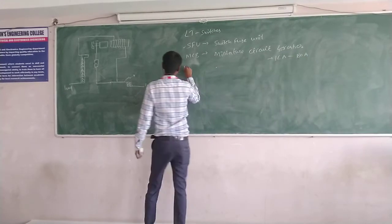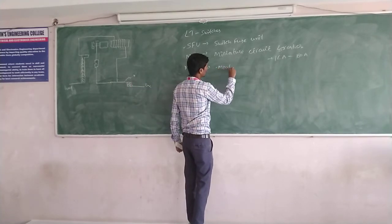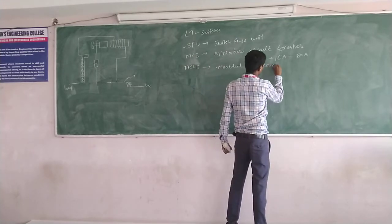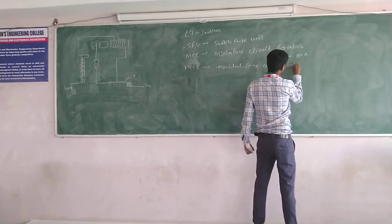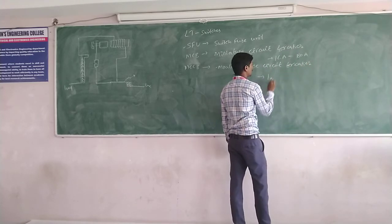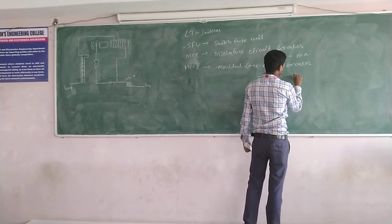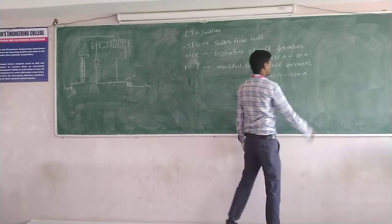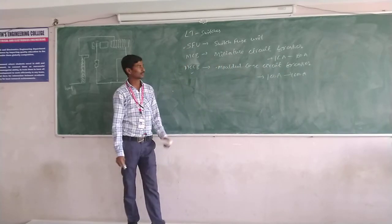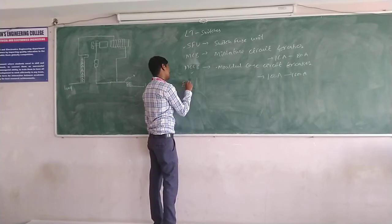Next is MCCB — Molded Case Circuit Breaker. This molded case circuit breaker is used from above 100 amperes, from 100 amperes to 1600 amperes. MCCBs are used for industrial purposes.